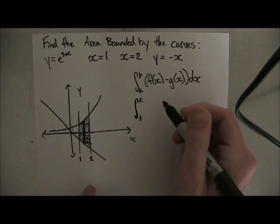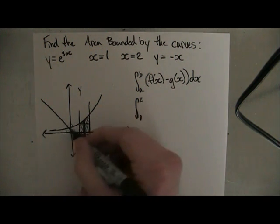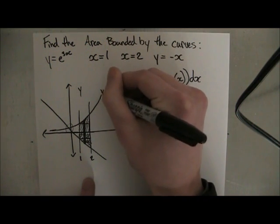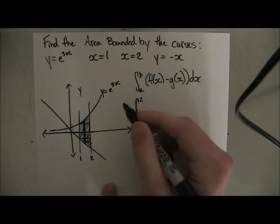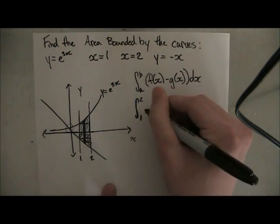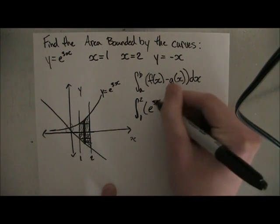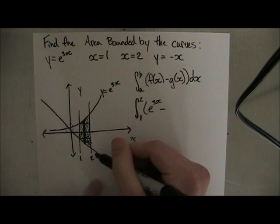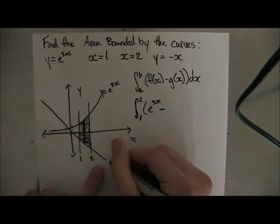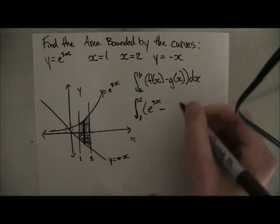And then f of x, what is our upper function and what is our lower function? Well, if this is our rectangle, what function touches the top of our rectangle? We can see it's this one, which I didn't write down, but you guys should know it's y equals e to the 3x. So let's write that down. e to the 3x. And you can see we have the x, because that's what we need, it's in relation to x. And then we do minus the lower function, which is this one coming through here, which is y equals minus x.